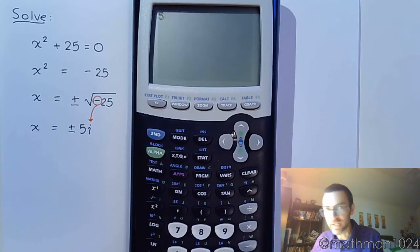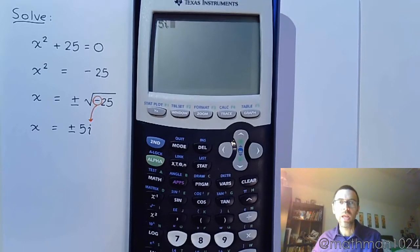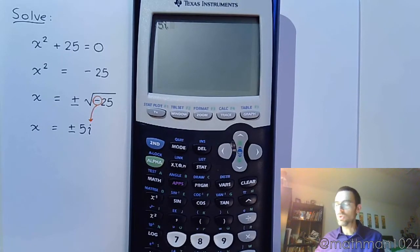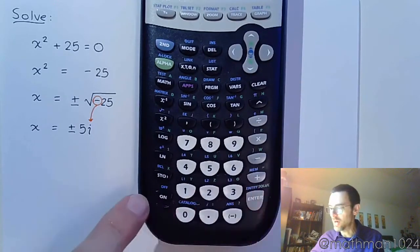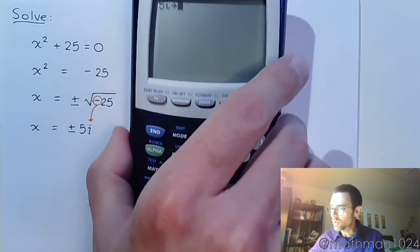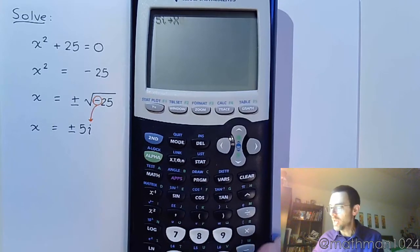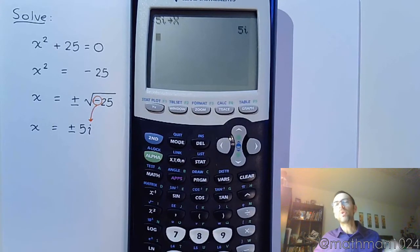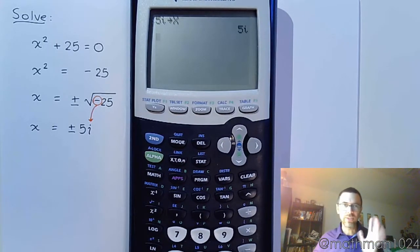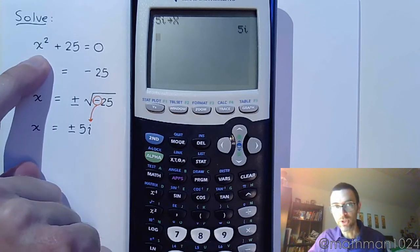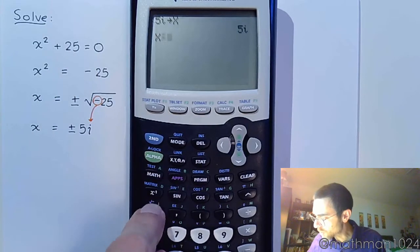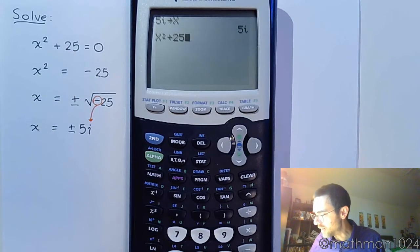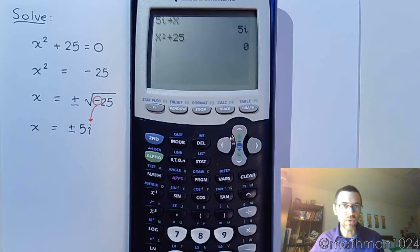I'm going to type 5 and then second-decimal to bring up the i, making 5i. Now I'm going to store it by pressing the store button and store this in for X. When I hit enter, whatever value I had stored for X is overwritten, and now we can type in the original equation to check if it equals 0. If I type in X squared plus 25, I get 0.